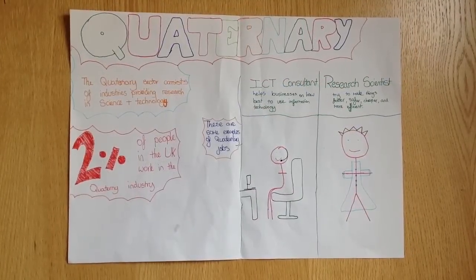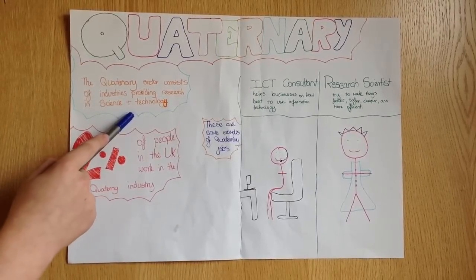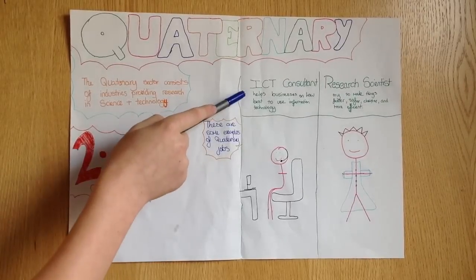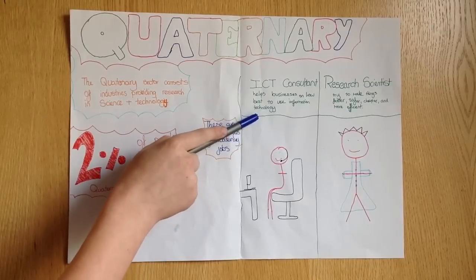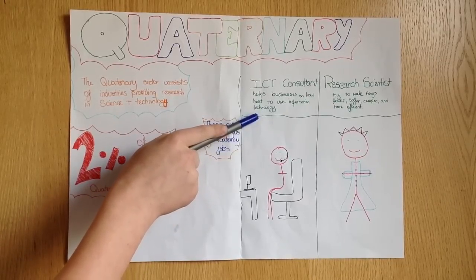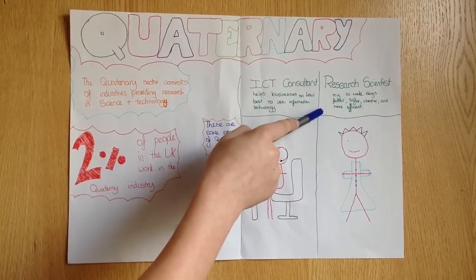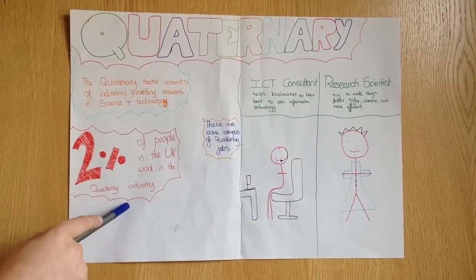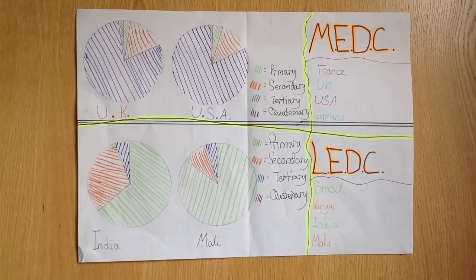The quaternary sector consists of industries providing research in science and technology. Two examples of a quaternary job are an ICT consultant and a research scientist. An ICT consultant helps businesses on how best to use information technology. The research scientist will try to make things faster, safer, cheaper, and more efficient. 2% of the people in the UK work in the quaternary industry.